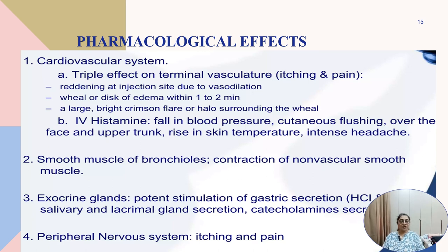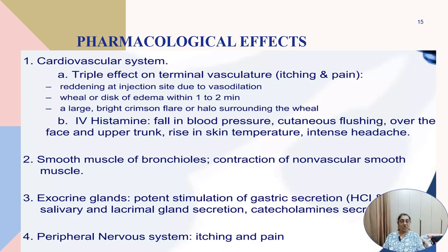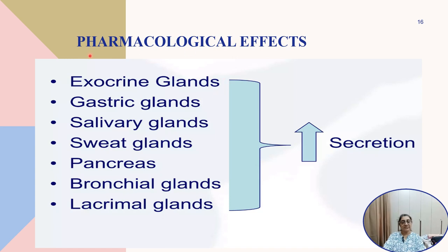Smooth muscle contraction of the bronchi causes bronchoconstriction and precipitation of asthma can occur. Exocrine gland stimulation includes potent stimulation of gastric secretion causing hyperacidity. Salivary, lacrimal secretion, and catecholamine secretion also increase. Peripheral nervous system effects include itching and pain. All secretions are increased — from gastric, salivary, sweat, pancreatic, bronchial, and lacrimal glands.